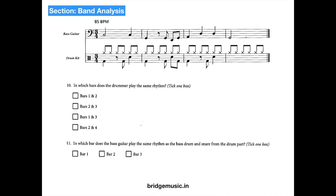In which bars does the drummer play the same rhythm? Scanning through — bar 3 has an extra bass drum — but the first and third bars are exactly the same rhythm, so the answer is bars 1 and 3. In which bars does the bass guitar play the same rhythm as the bass drum and snare drum of the drum part? Matching the bass drum and snare to the bass guitar — the correct answer is bar 2.